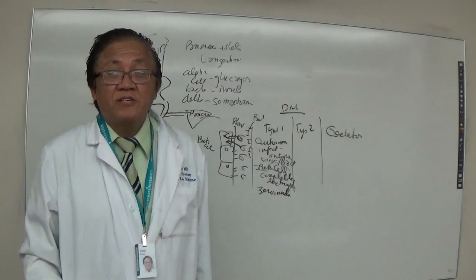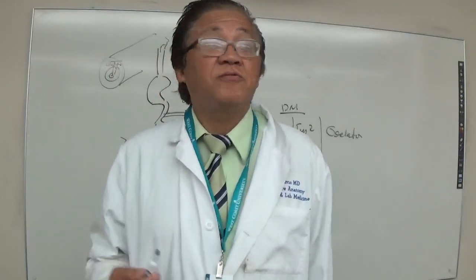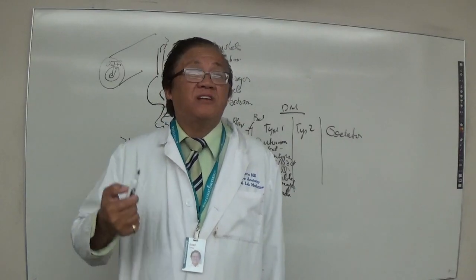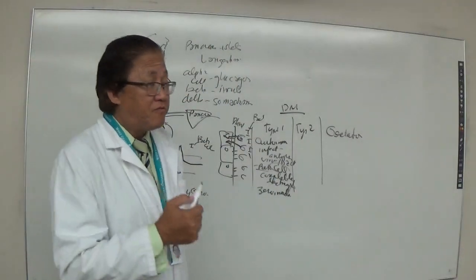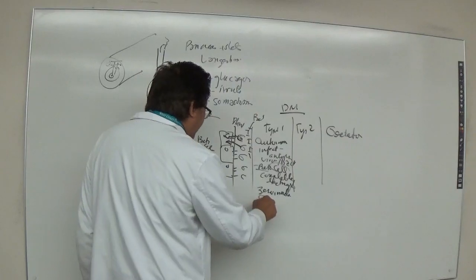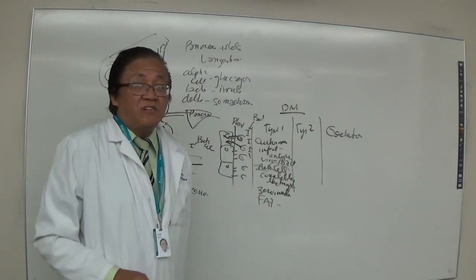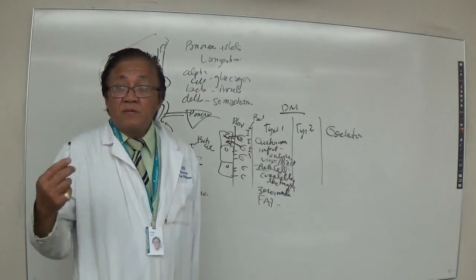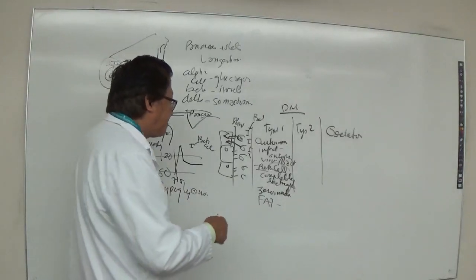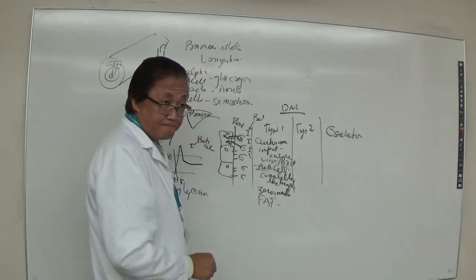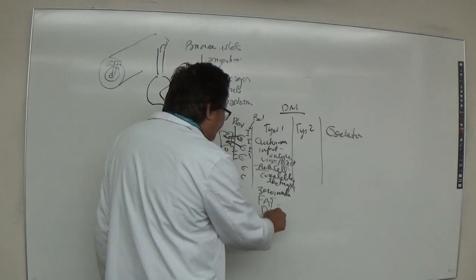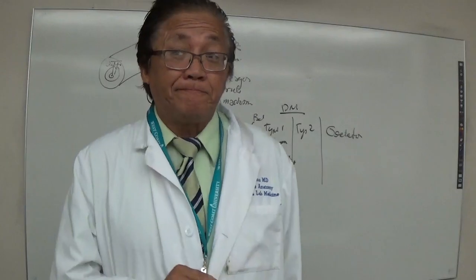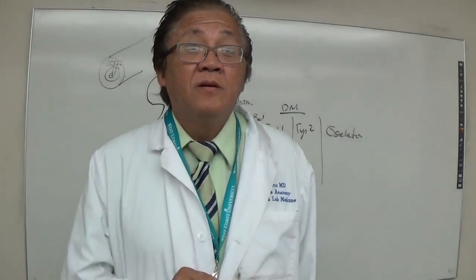Because the beta cells are completely destroyed, zero insulin is produced. The cell still needs to survive, so without glucose, it uses fat as an alternate energy source. The utilization of fat produces waste products called ketone bodies, which are acidic — that's why you develop diabetic ketoacidosis, which occurs only in type one.